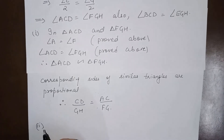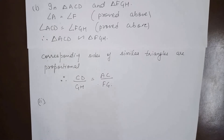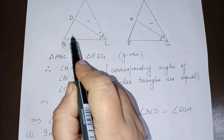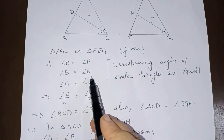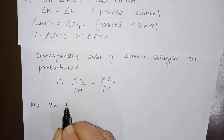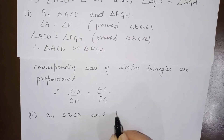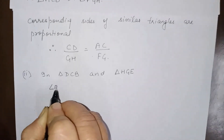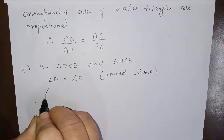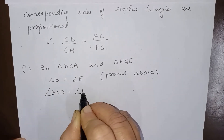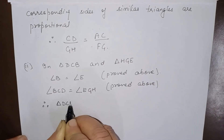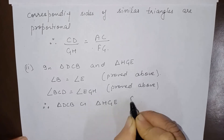For the second part, we have to prove that triangle BCD is similar to triangle EGH. In triangle BCD and triangle EGH: angle B equals angle E (proved above), and angle BCD equals angle EGH (proved above). Therefore, triangle BCD is similar to triangle EGH by AA similarity.